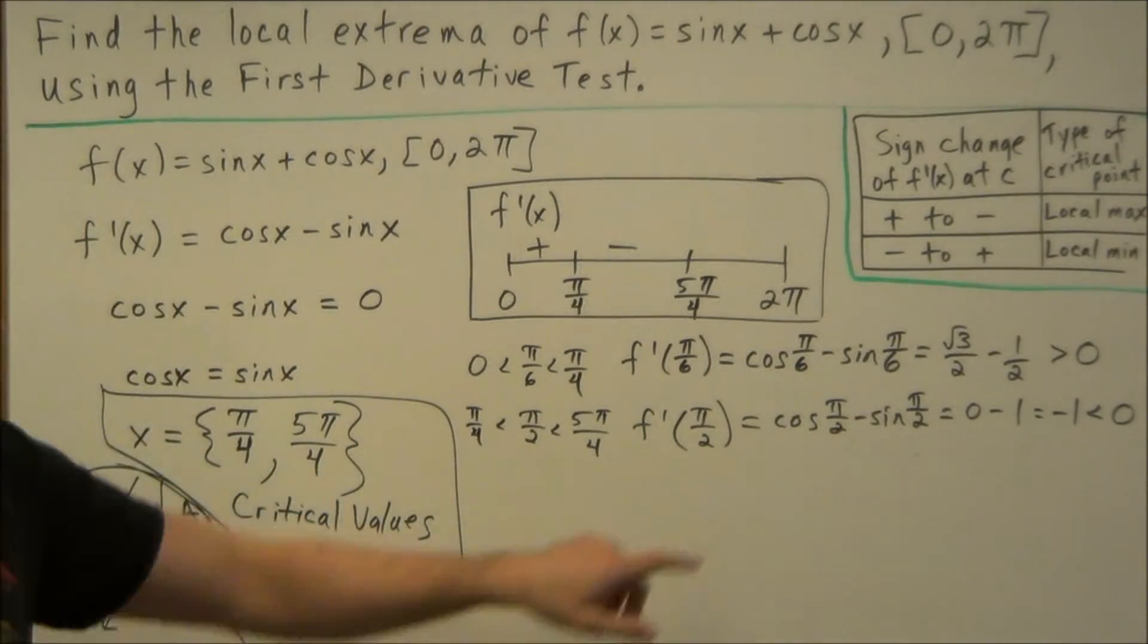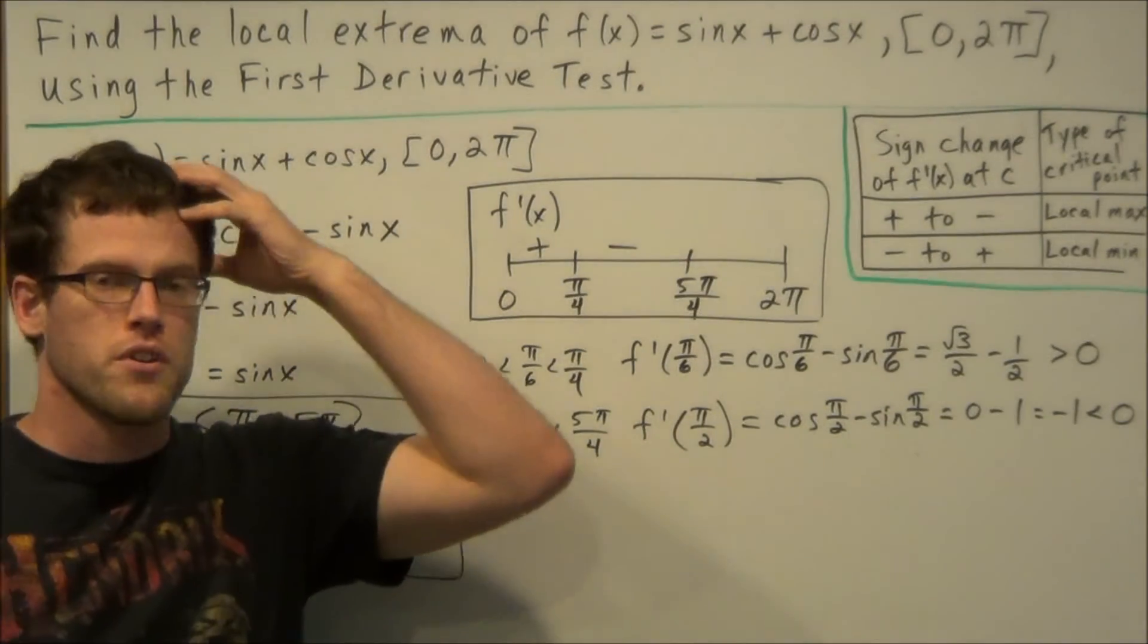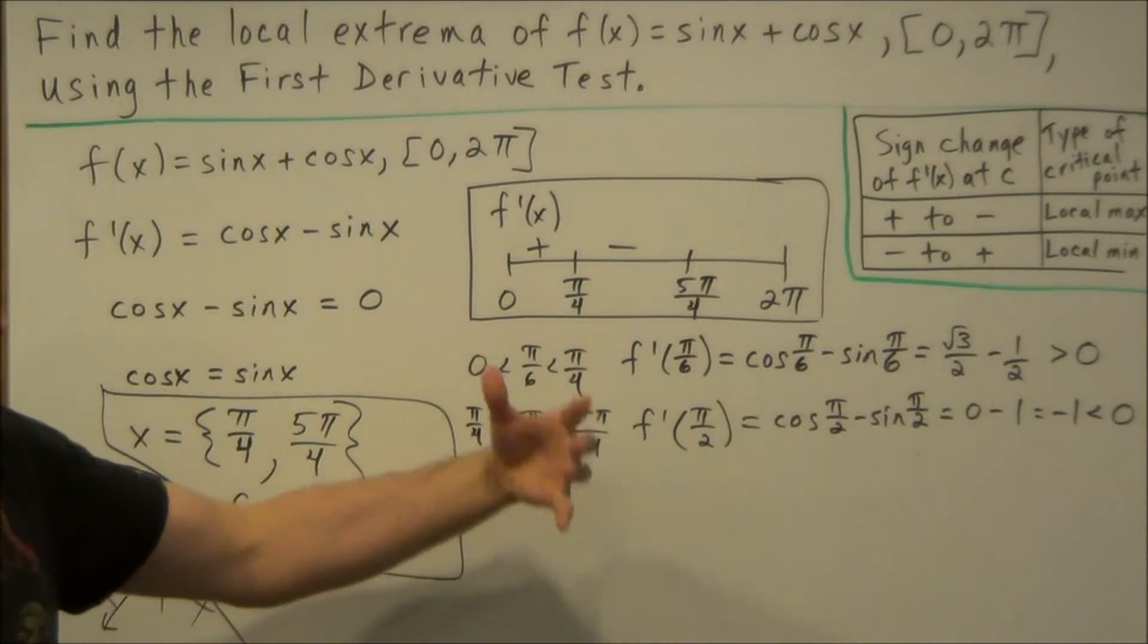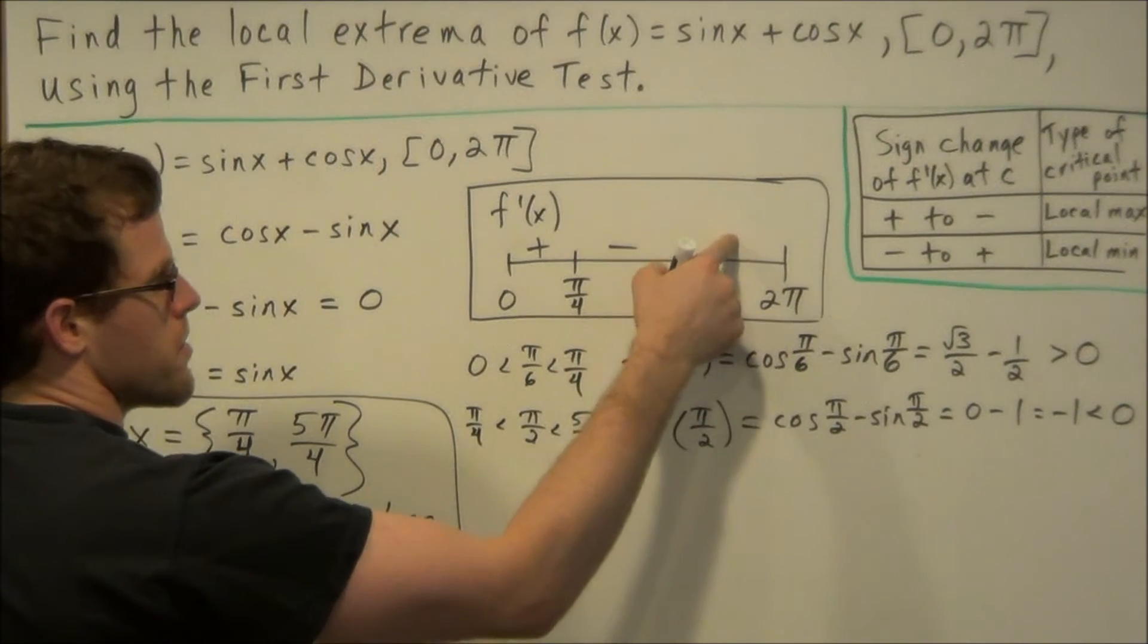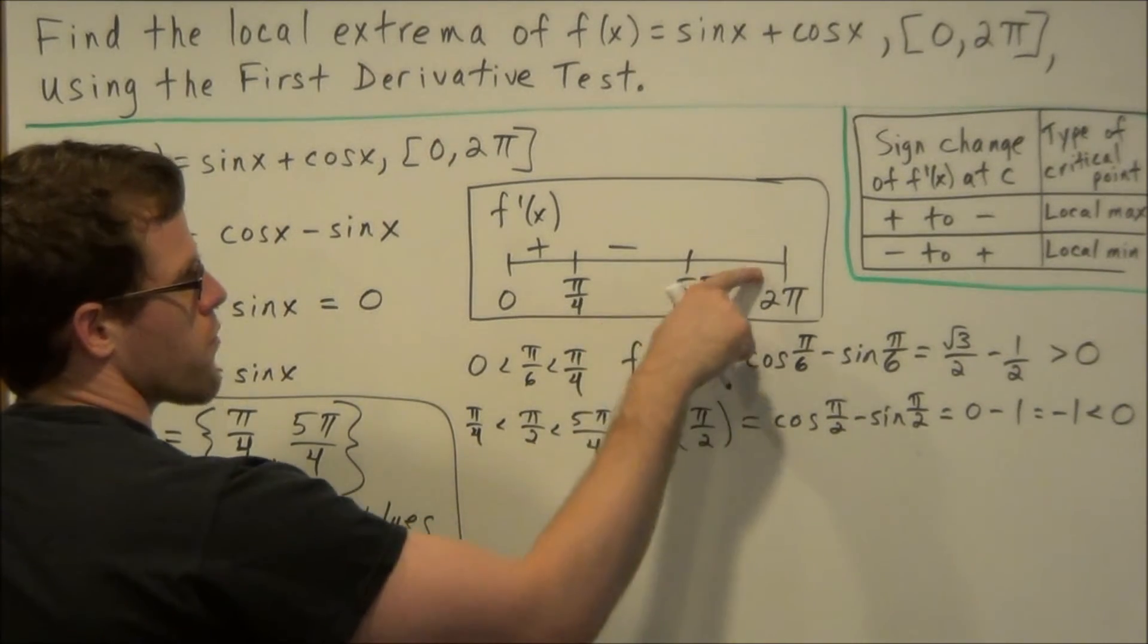And just know, as you do more of these problems, this part may go on, you may do this part in your head. But as you're building up to it, you may want to write it out on the side just to be certain. So then the last subinterval to check is between 5π/4 and 2π. But remember, this is 225 degrees and 360 degrees.